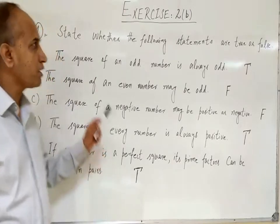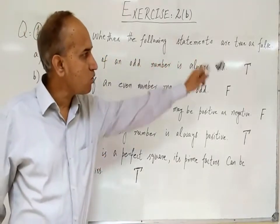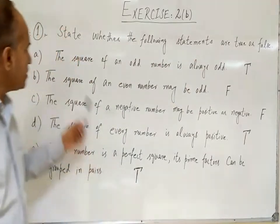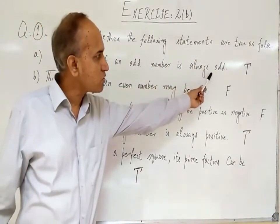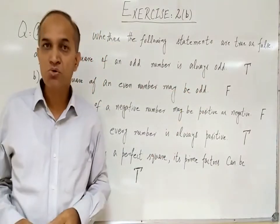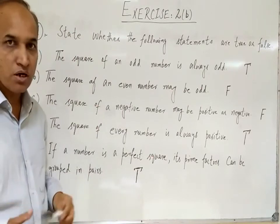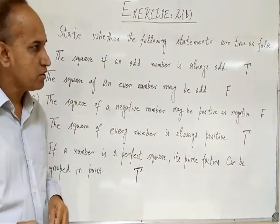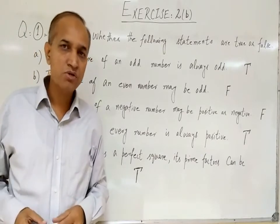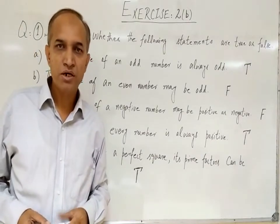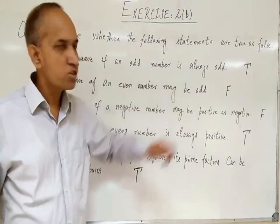In question number 1, we have to state whether the following statements are true or false. In part A, the square of an odd number is always odd. This is true because every odd number has a square that is again an odd number. For example, 3 is an odd number and the square of 3 is 9, which is again an odd number. So this is true.